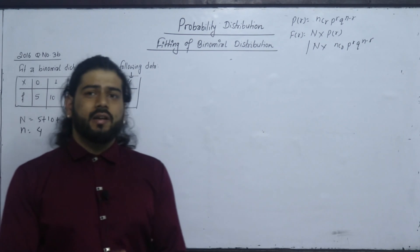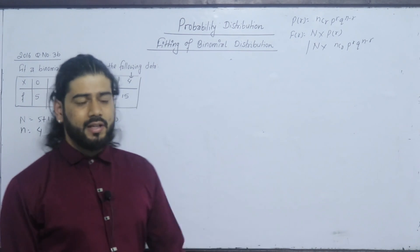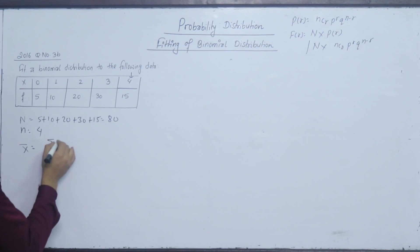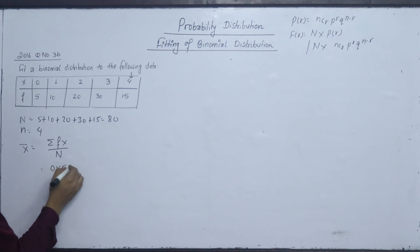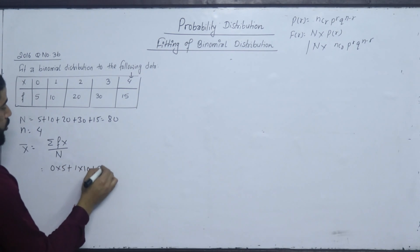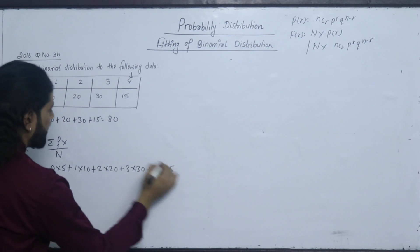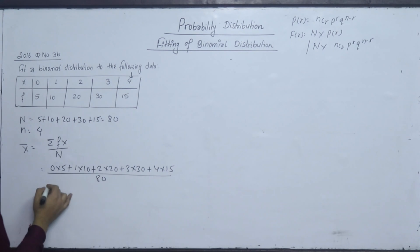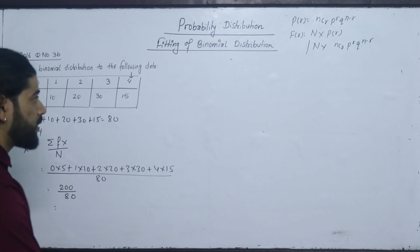We want to find the value of P. P is estimated from the mean. The mean is summation of f times x divided by summation f. The mean equals 0 times 5 plus 1 times 10 plus 2 times 20 plus 3 times 30 plus 4 times 50, divided by 80. That gives 200 divided by 80, which equals 2.5.